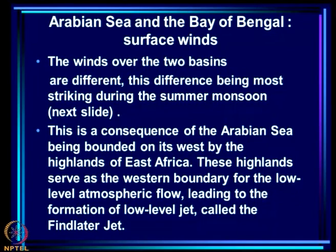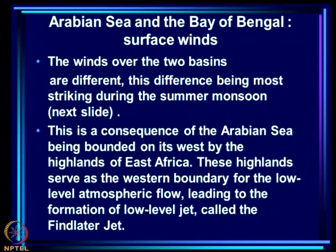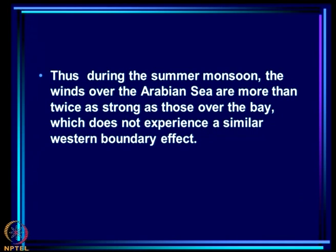Why does this difference occur? It is a consequence of the Arabian Sea being bounded on its west by the highlands of east Africa. Because of this, the highlands act as a boundary to the lower atmosphere and generate a strong jet in the atmosphere known as the Findlater jet. These highlands serve as the western boundary for the low-level atmospheric flow, leading to the formation of this low-level jet. Thus during the summer monsoon, the winds over the Arabian Sea are more than twice as strong as those over the Bay, which does not experience a similar western boundary effect.